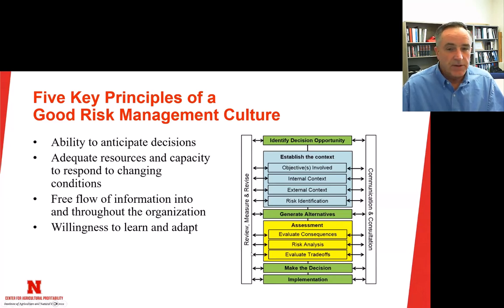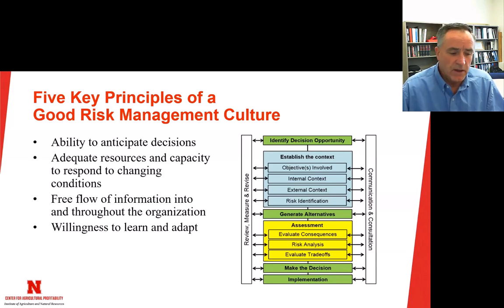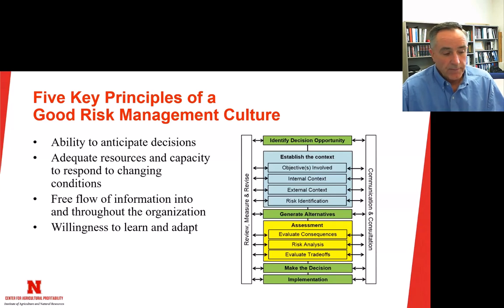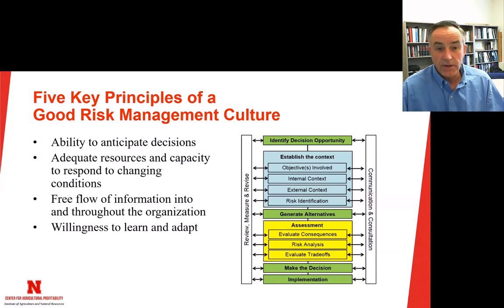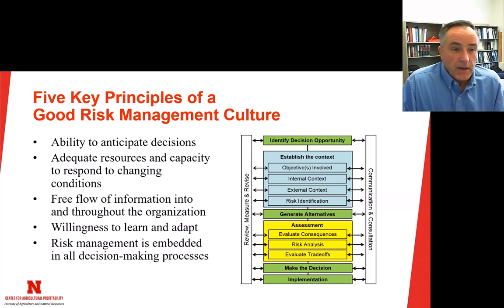The fourth principle is the willingness to learn and adapt — that's the left-hand pillar, the review, measure, and revise. Information flowing is only good if you actually use it. Part of that is being willing to go back and update information or dig deeper for more accurate details. One thing students really struggle with is updating their objectives — they largely view that as a one-and-done thing, and it's almost never that. Research has shown people can only identify about half of the things they're trying to accomplish in any decision making setting.